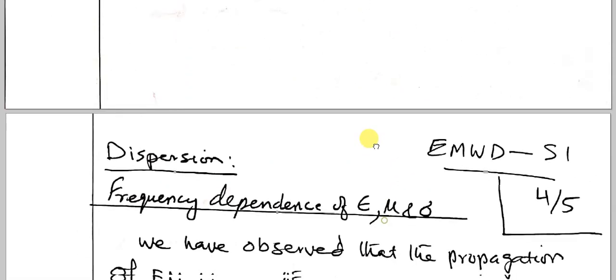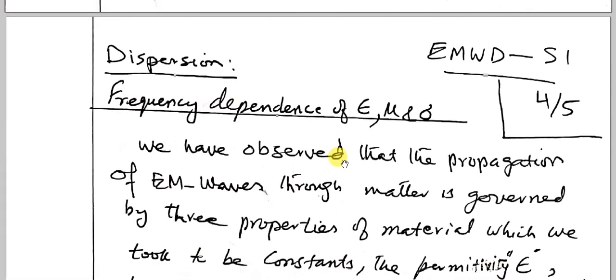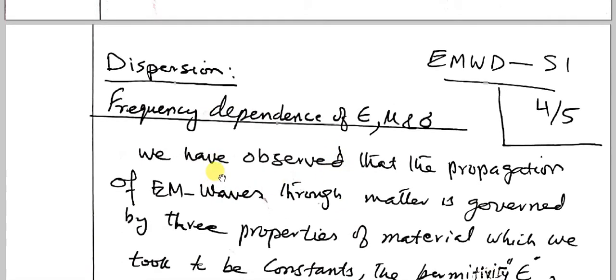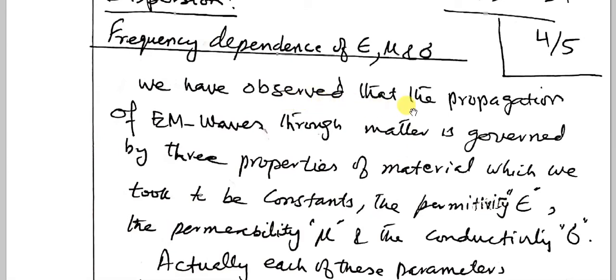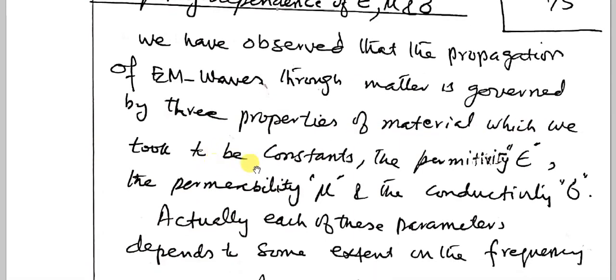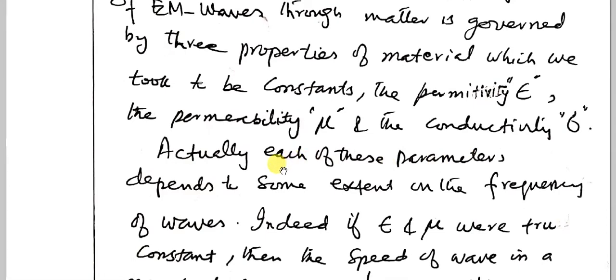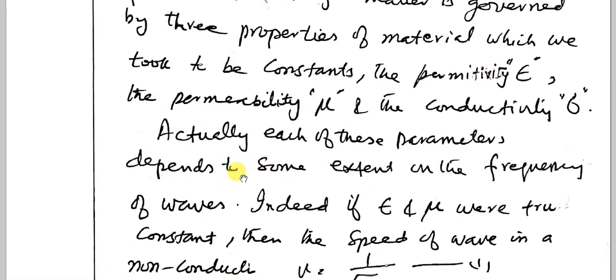Now, let's take into account in dispersion the frequency dependence of epsilon, mu, and sigma. We have observed that the propagation of electromagnetic waves through matter is governed by three properties of the material which we took to be constants: the permittivity epsilon, the permeability mu, and the conductivity sigma. Actually, each of these parameters depends to some extent on the frequency of the waves.